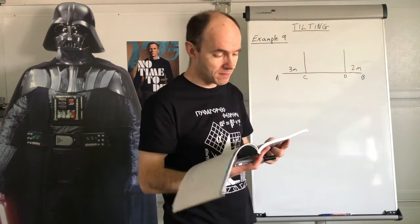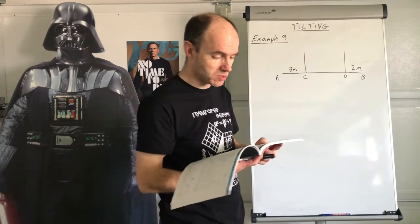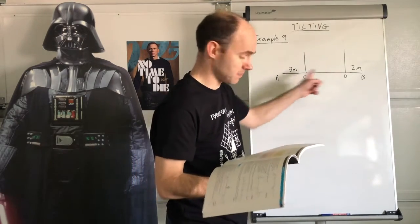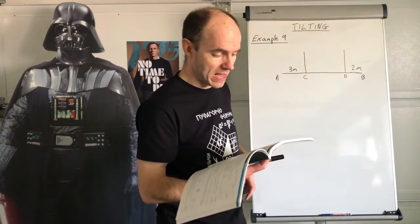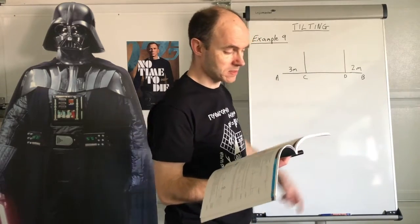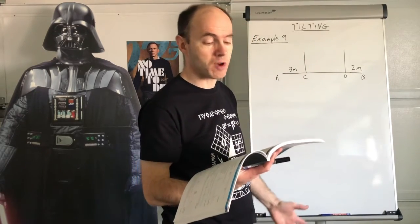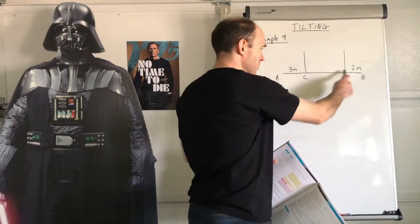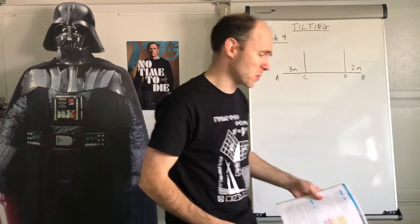A non-uniform rod AB of length 10 meters and weight 40 newtons is suspended from a pair of light cables attached to C and D. Where AC is 3 meters, BD is 2 meters. Can you see where the center of mass is roughly going to be? The center of mass could be roughly between C and D. This is another type of question.